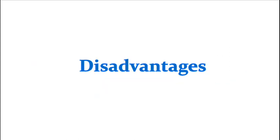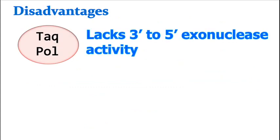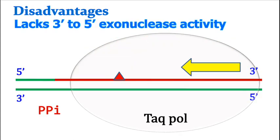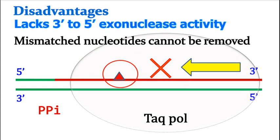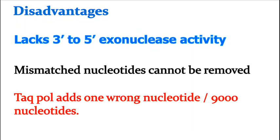The disadvantage of Taq DNA polymerase is that it lacks 3 prime to 5 prime exonuclease activity. Hence, mismatched nucleotides cannot be removed. Because of this reason, Taq DNA polymerase adds one wrong nucleotide per 9000 nucleotides.